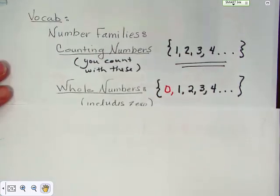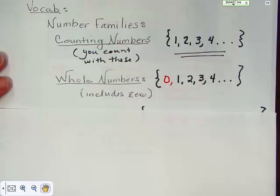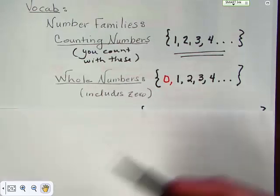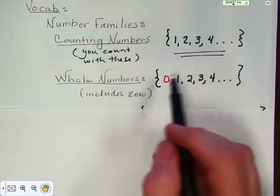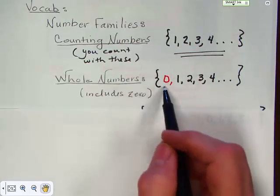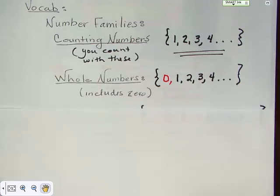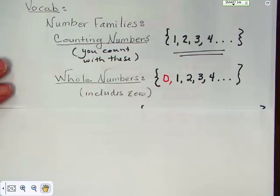Another set of numbers includes the counting numbers but then adds one more number — zero. We don't count with zero, but zero is a part of the whole numbers.